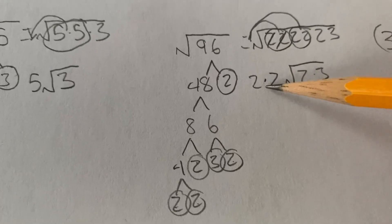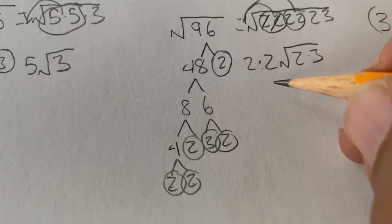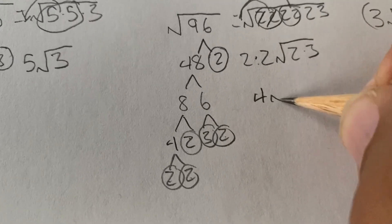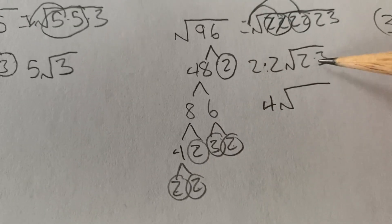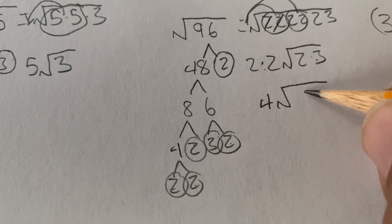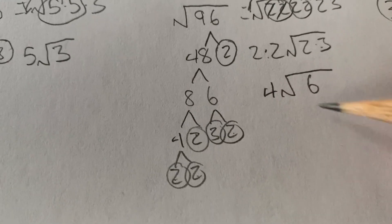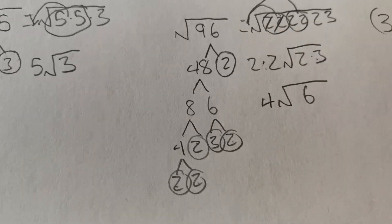Now, if there are more than one number on the outside, you have to multiply them, causing this to be 4. If there are more than one number inside, you also have to multiply them, causing it to be 6. And that's the simplified version of the square root of 96.